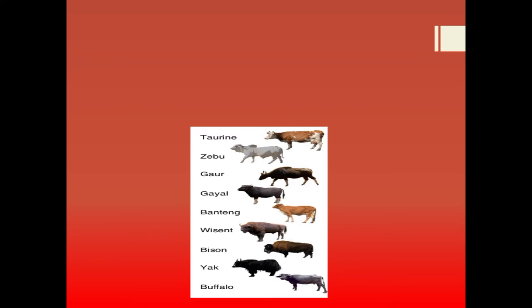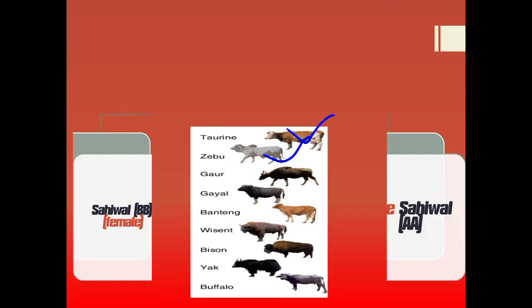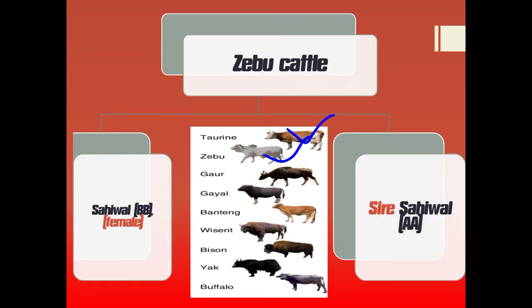Another example includes cattle breeding. There are two types: taurine and zebu cattle — European cattle and zebu cattle. Zebu cattle includes a variety of breeds; for example, Sahiwal is one zebu cattle breed. A Sahiwal breed female having the genetic characteristic of alleles BB, and a sire having the allelic genotype AA — the mating between these is referred to as outcrossing because they are not sharing common ancestors.